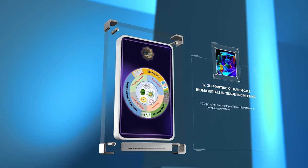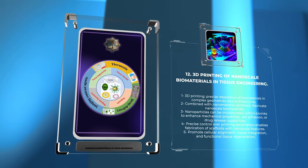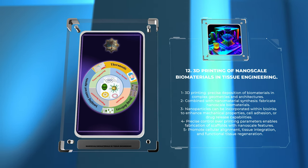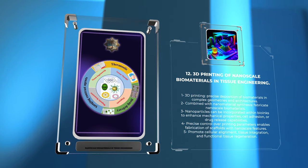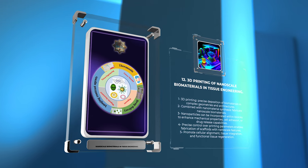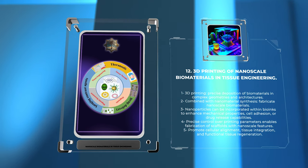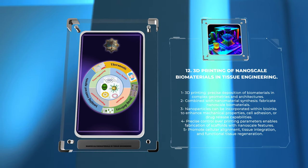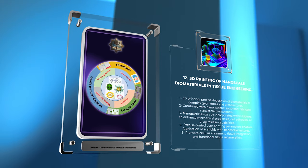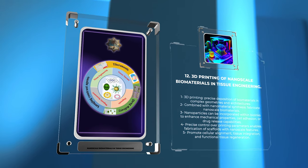3D printing has revolutionized tissue engineering by allowing the precise deposition of biomaterials in complex geometries and architectures. When combined with advancements in nanomaterial synthesis, 3D printing offers new possibilities for fabricating nanoscale biomaterials in tissue engineering. Nanoparticles can be incorporated within bioinks to enhance their mechanical properties, cell adhesion, or drug release capabilities. Furthermore, the precise control over printing parameters enables the fabrication of scaffolds with nanoscale features, promoting cellular alignment, tissue integration, and functional tissue regeneration. The combination of 3D printing and nanotechnology holds immense potential for creating intricate tissue constructs and personalized implants, paving the way for patient-specific therapies in tissue engineering.